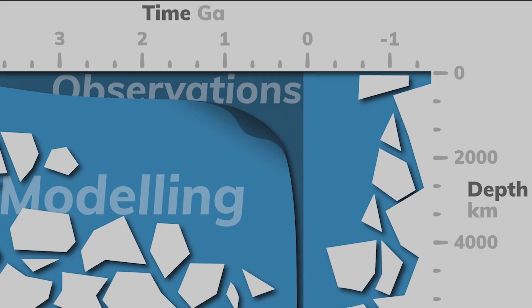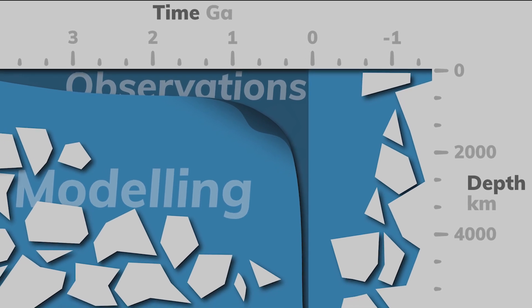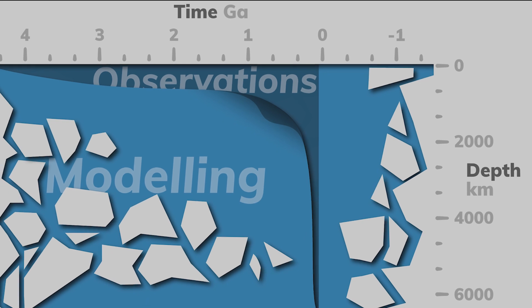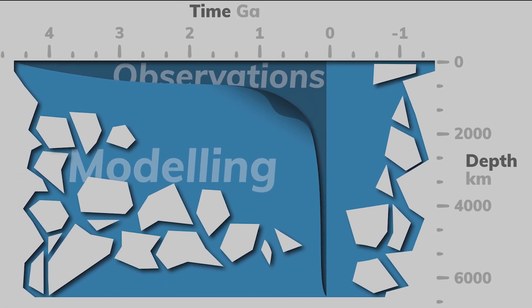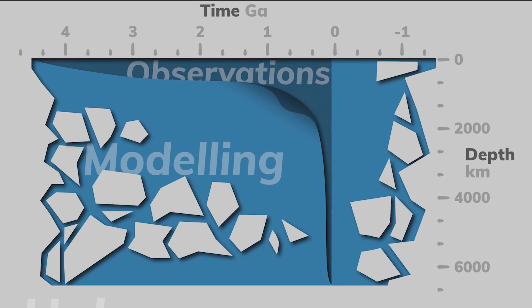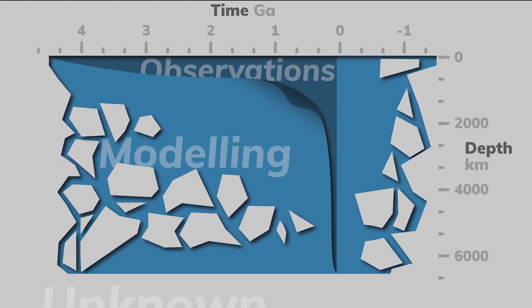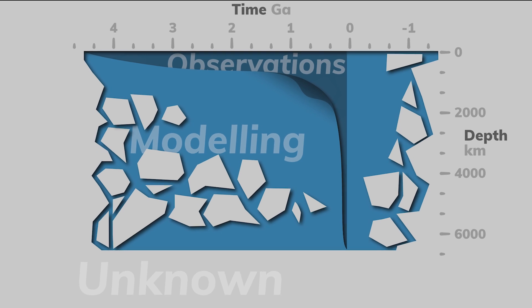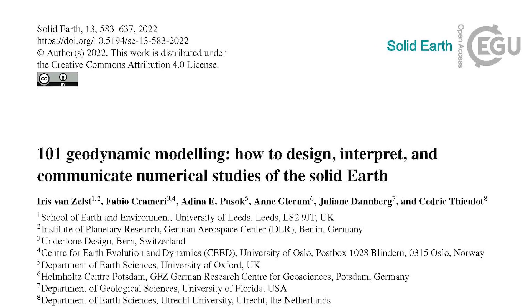Geodynamic modeling is important because when we are trying to understand the Earth and its large-scale happenings, we don't have any direct data. We can't really look very deep below our feet — we can only maybe look directly for a kilometer or 10 or so, while the Earth is much bigger than that. So in order to actually learn something about the large-scale dynamics, both in space and time, we need geodynamic modeling to tell us what is at least physically possible.